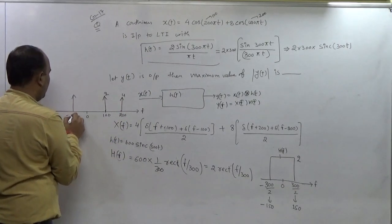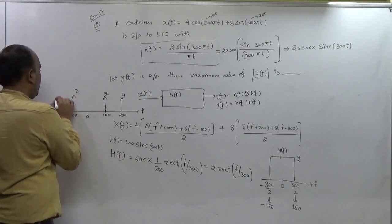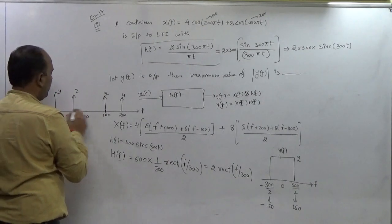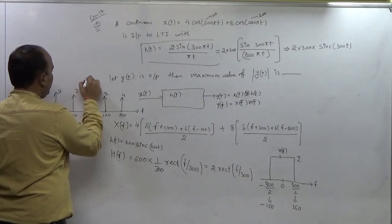And one will be at minus 100, amplitude will be 2. One at the minus 200, amplitude will be 4, and this one we are drawing from the Xf.